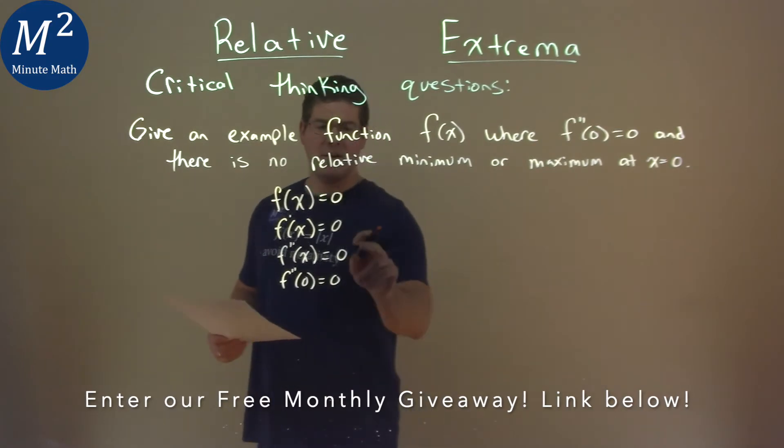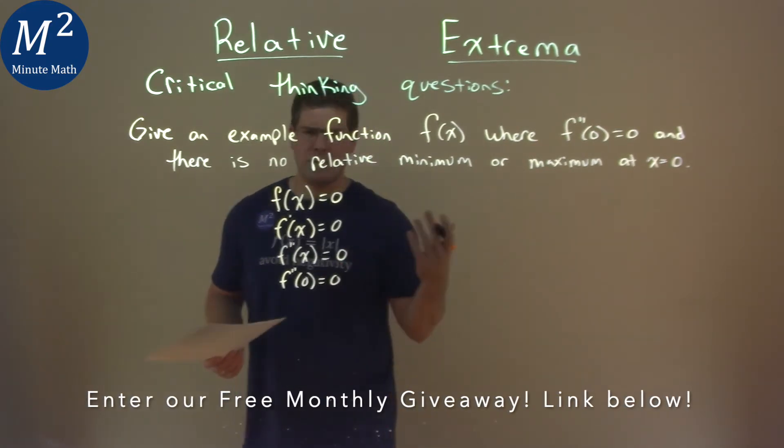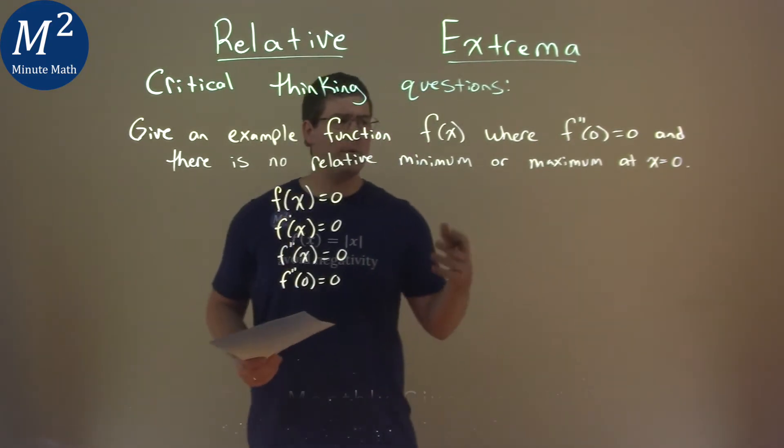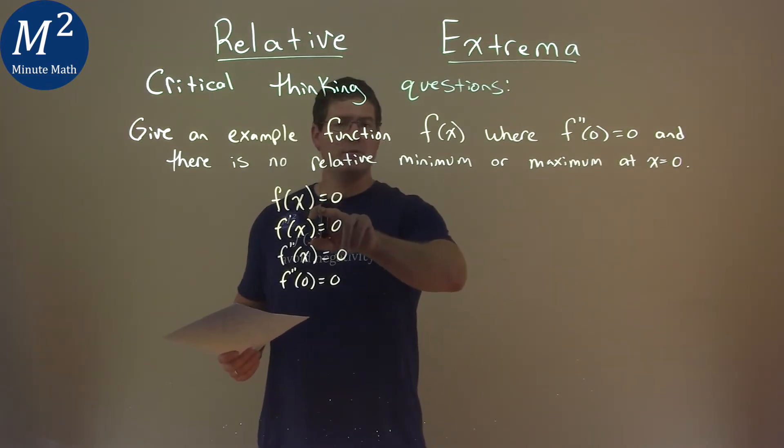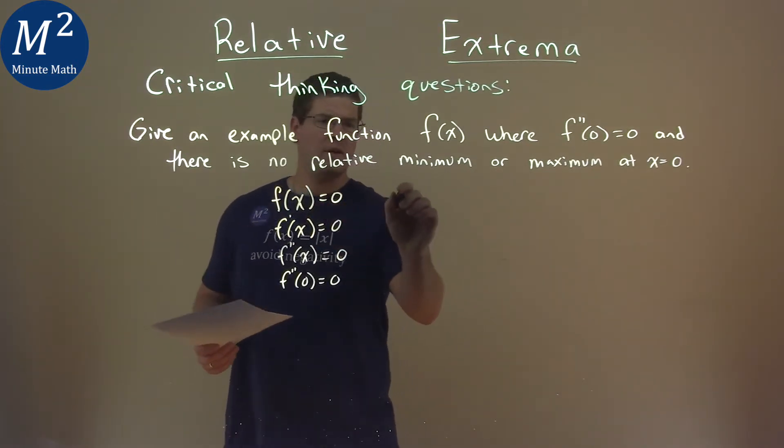We're good. So again, this is our function, this is when we plug 0 in. Is there a relative minimum or maximum on the line y equals 0? No, that's a horizontal line.